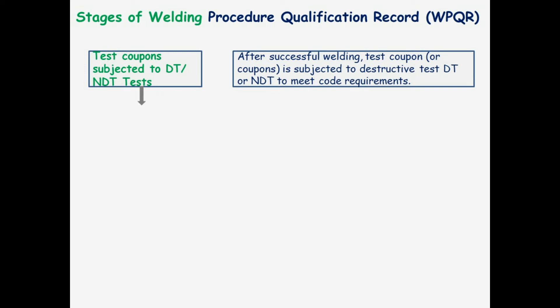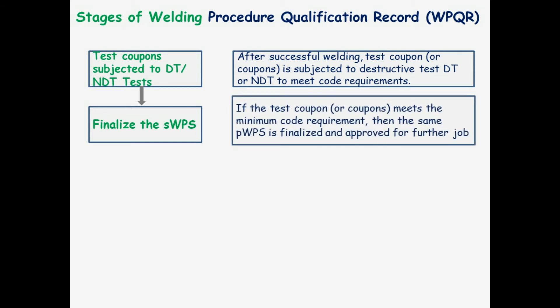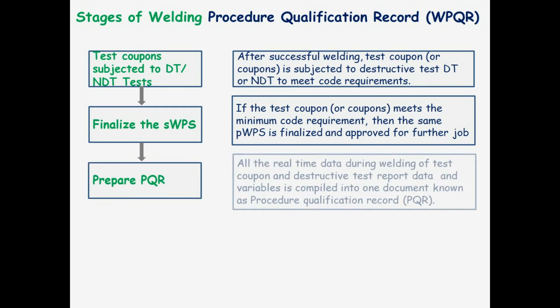Thereafter, finalize the SWPS. If the test coupon or coupons meet the minimum code requirement, then the same preliminary WPS is finalized and approved for further job. Thereafter, prepare the PQR. All real-time data during welding of the test coupon, and destructive test report data and variables, are compiled into one document known as the Procedure Qualification Record, PQR.